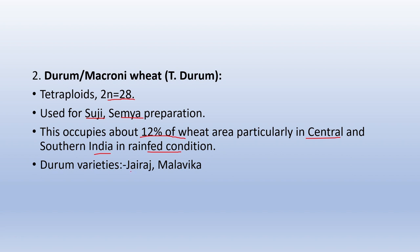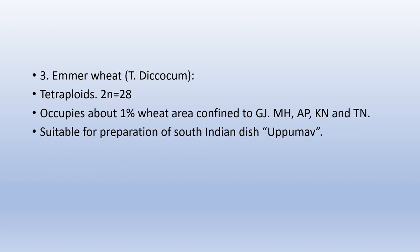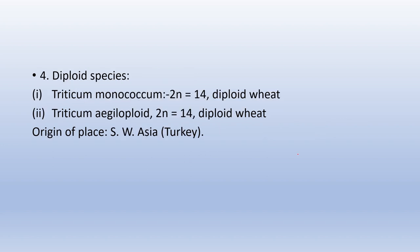Triticum durum varieties are Jairas and Malvika. Third species is emmer wheat — Triticum dicoccum, a tetraploid species with 2n = 28. It covers only 1% of wheat area in India, mostly grown in Gujarat, Maharashtra, Andhra Pradesh, Karnataka, and Tamil Nadu. It is suitable for preparation of south Indian dish upma. Fourth, diploid species are Triticum monococcum and Triticum aegilopoides, with chromosome number 2n = 14.